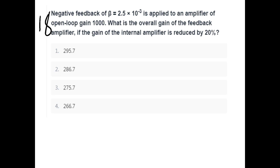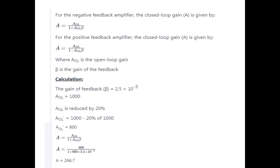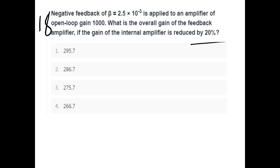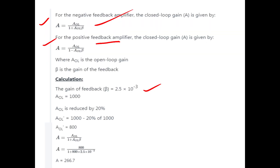Negative feedback is applied to an amplifier with open loop gain of 1000. The closed loop gain formula for negative feedback is AF equal to AOL divided by (1 plus AOL·β). The feedback factor beta is 2.5 into 10 raise to minus 3. The open loop gain is reduced by 20 percentage, meaning AOL becomes 1000 minus 20% of 1000, which is 800.